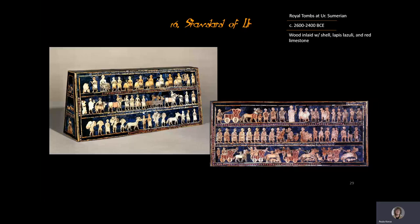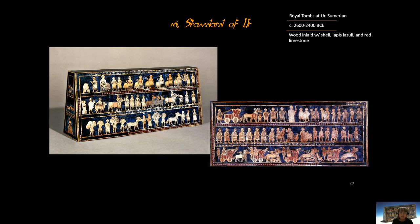This is number 16, the Standard of Ur. It is the third among the Sumerian pieces of our set, located in the Mesopotamia region of the Middle East. There are two images associated with this piece: one is a peace side, and one is a war side.